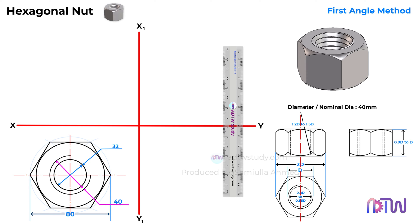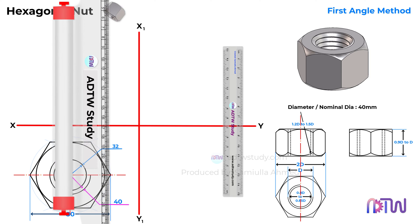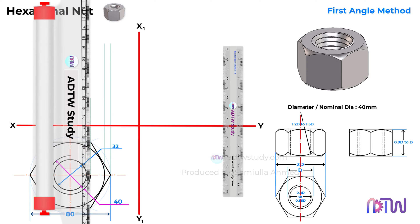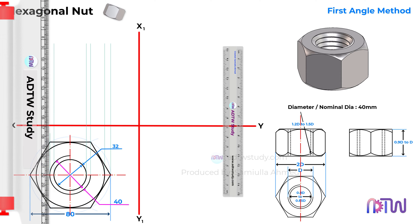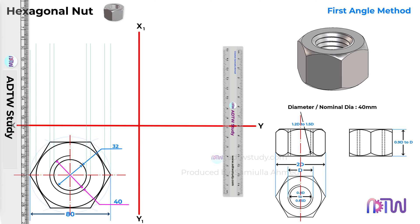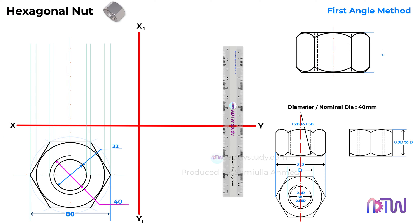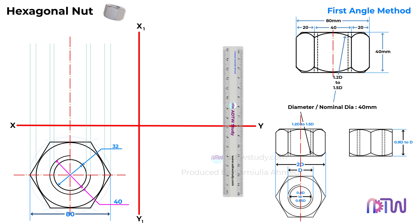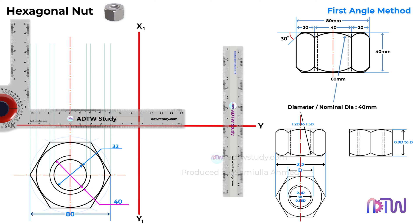Next, we will draw the front view. To do so, project the projection lines as shown. The height or thickness of the nut is equal to the diameter, which is 40mm. The width of the nut across corners will be equal to 2 times the diameter, which is 80mm. The middle portion is equal to the diameter and the sides are half of the diameter. The radius of the chamfer ranges between 1.2 to 1.5 times the diameter. The angle made by the chamfer at corners ranges between 15 to 30 degrees — in our case, we will consider 30 degrees. Since the height of the nut is 40mm, take a drafter and draw the required rectangular outline.